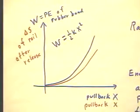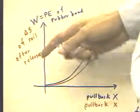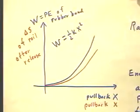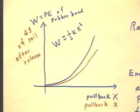This tells us that the delta s of the rail after release seems to be proportional to the potential energy of the rubber band. And we've seen that since the force that has to be exerted by that rail as it moves is constant,